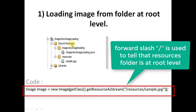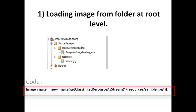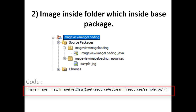In this case you have to create an Image object. To create the Image object you have to use the selected code. You can see we are loading images from root level, so you have to use a forward slash before the resources folder name — that means before the root folder.